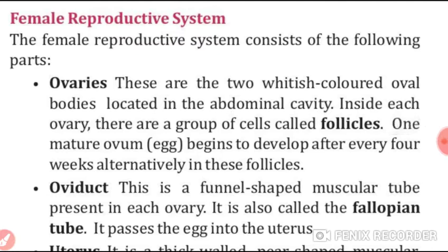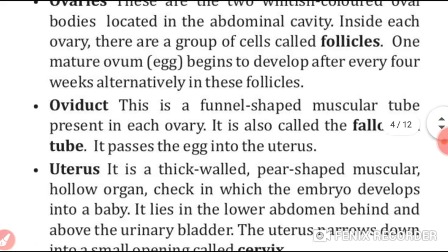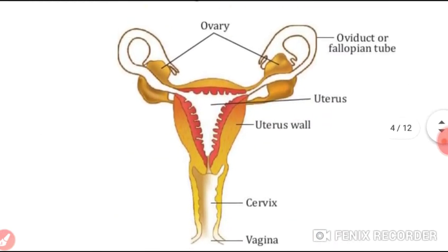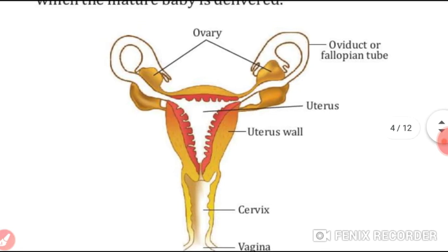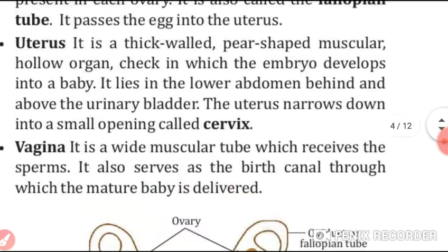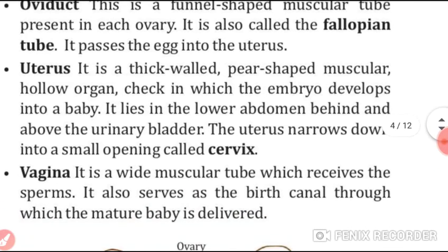Now let's read about the female reproductive system. It consists of the following parts. First, ovaries — these are two whitish-colored oval bodies located in the abdominal cavity. Inside each ovary there are groups of cells called follicles, and one mature egg begins to develop after every four weeks, alternatively in these follicles. Next, oviducts — these are funnel-shaped muscular tubes present at each ovary, also called fallopian tubes. They pass the egg into the uterus. In the diagram we can see the ovary, oviduct or fallopian tubes, uterus, uterus wall, cervix, and vagina.